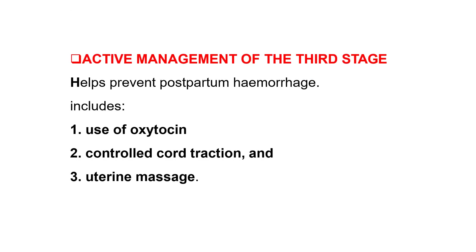Active management of the third stage of labour helps prevent postpartum hemorrhage. For this we give oxytocin and other uterotonic drugs, apply controlled cord traction, and massage the uterus to stimulate uterine contraction.